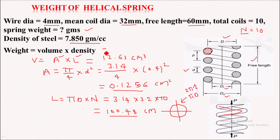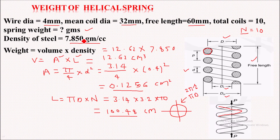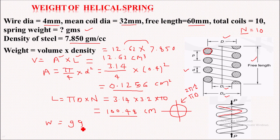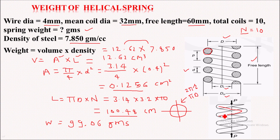So we have the weight formula, that is volume into density. We have volume of 12.62, and the density given is 7.850 grams per cc. So if we solve this — 12.62 into 7.850 — we will get the weight of the spring, which comes out as 99.06 grams.